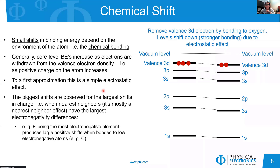Let's look at the chemical shift. Chemical shifts are small shifts in binding energy that depend on chemical bonding. Generally, the core level binding energy increases as we withdraw electron density and the positive charge of the atom increases. In simple approximation, it's an electrostatic effect.